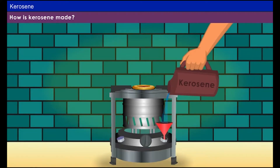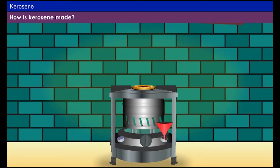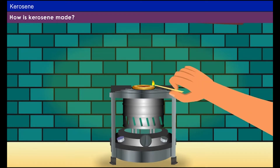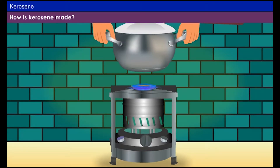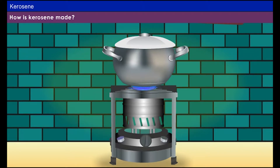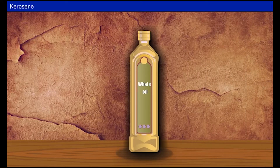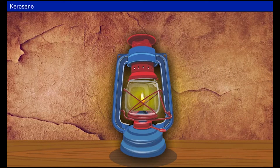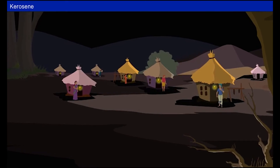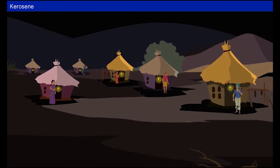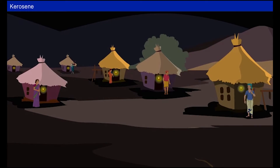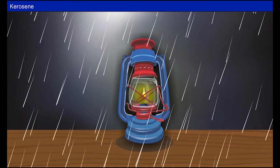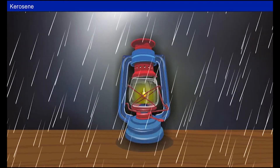Kerosene is a hydrocarbon compound extracted as liquid from refined petroleum. It is obtained by fractional distillation of crude oil. The calorific value of kerosene is 35,000 kJ per kilogram. Kerosene replaced whale oil as a primary source for lamps because it lasted longer and was easier to obtain. Those who live in rural areas use kerosene lamps because of the longevity of the fuel and its ease of transportation.